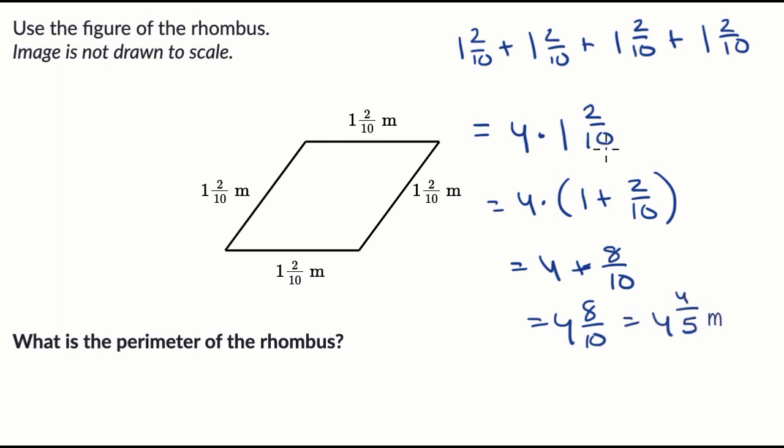Another way we could have done it is we could have rewritten one and two tenths as the same thing as 12 tenths. Four times 12 tenths is going to be 48 tenths, which is the same thing as four and eight tenths, which is the same thing as four and four fifths.